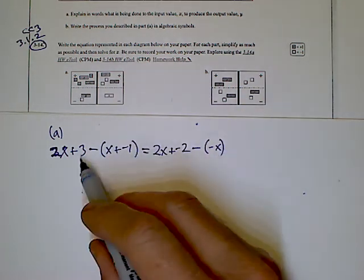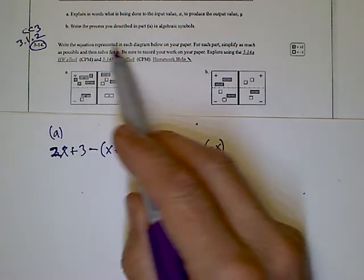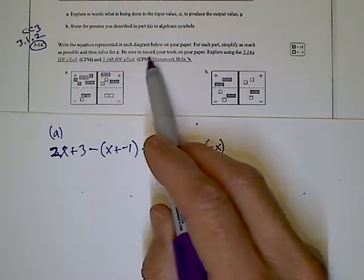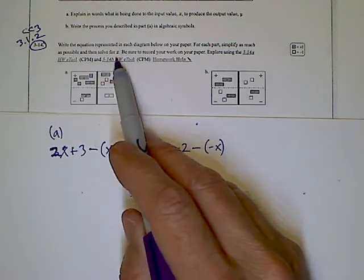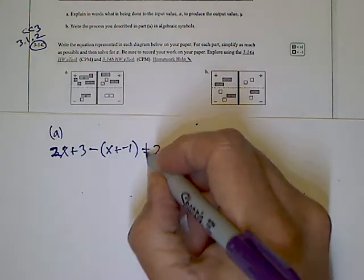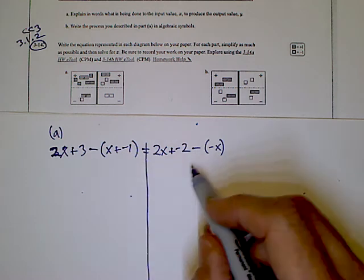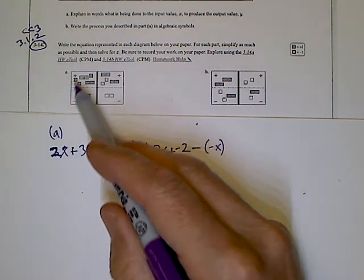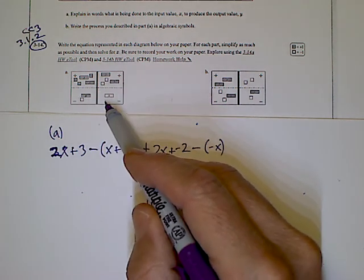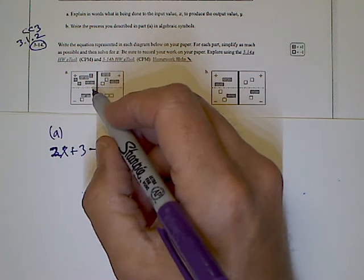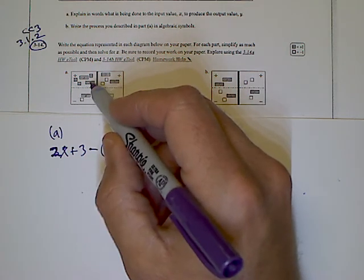On the right side we have a negative two on top, minus a negative x. That's what the equation looks like unsimplified, written directly from the tiles. The problem says to simplify as much as possible, then solve for x, so I'll show the algebra and also the simplifying process using the tiles.